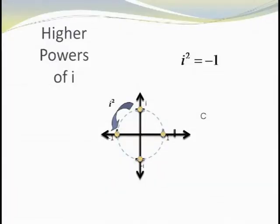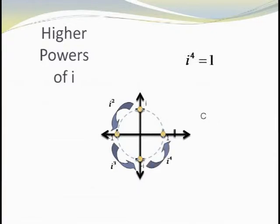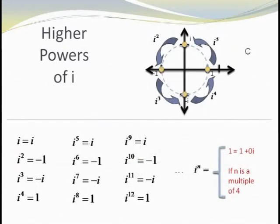Continually multiplying by i keeps rotating our point 90 degrees further in the counterclockwise direction. A special case often useful is to consider what happens when you multiply i times itself. We know that i squared is equal to negative 1. What about i to the 201st power? If we start at i, which is 0 plus i on the complex plane, then multiplying i times i will rotate this 90 degrees to negative 1. i cubed will rotate this again to minus i, and i to the fourth rotates back to 1. Every multiple of 4 brings us back to 1. Hence, for i to the 201st power, we break this apart into i to the 200th times i, which equals 1 times i, which is just i. Since 200 is a multiple of 4, i to the 200 equals 1.